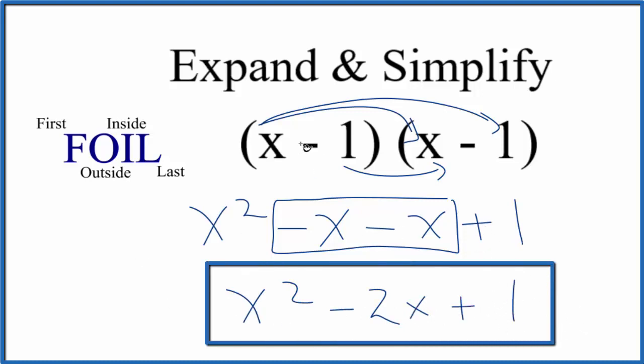So this is what we get when we expand and simplify x minus 1 squared. If you factored this, you'd end up back with x minus 1 times x minus 1, which you could write as x minus 1 squared.